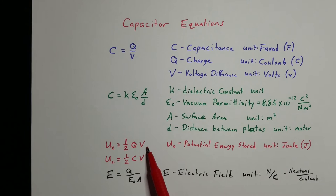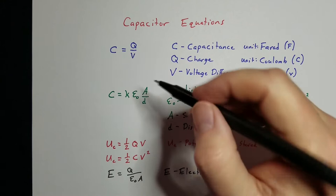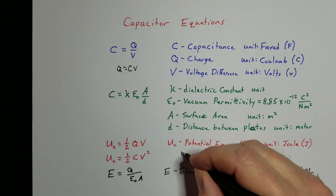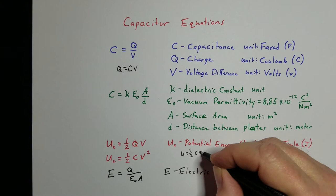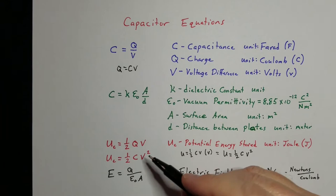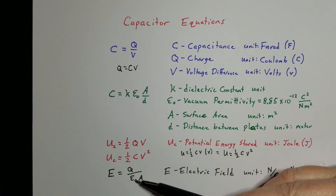The potential energy stored can be found one of two ways: U = ½QV, or U = ½CV², where energy is in joules. We can get from one to the other because C = Q/V, so solving for Q gives Q = CV. Substituting into U = ½QV gives U = ½(CV)V = ½CV². So they're both the same equation — one just doesn't include Q. The electric field between the plates is E = Q / (ε₀ × A).